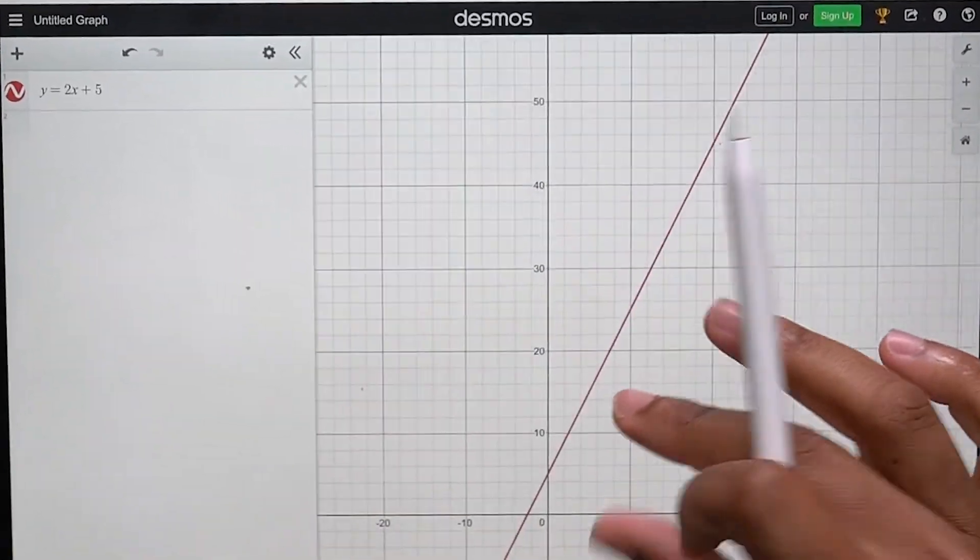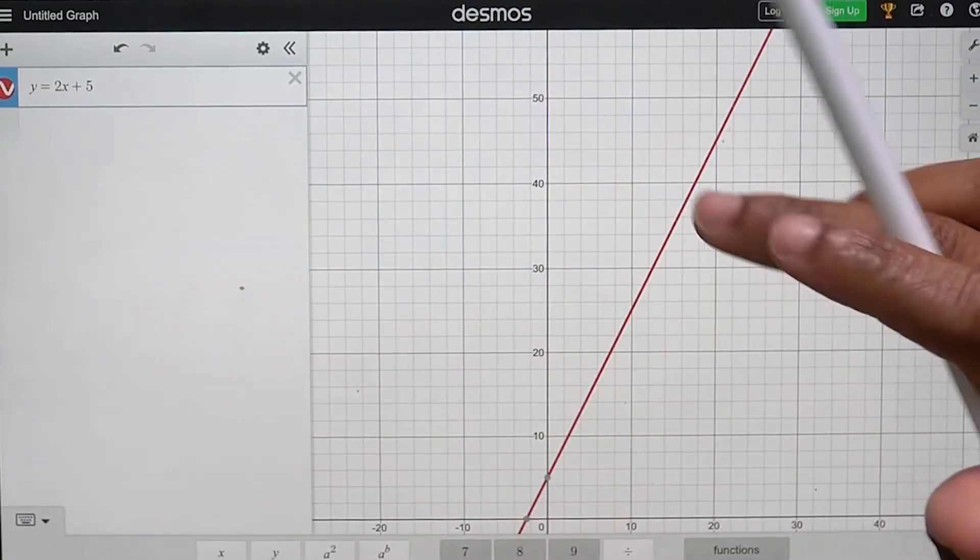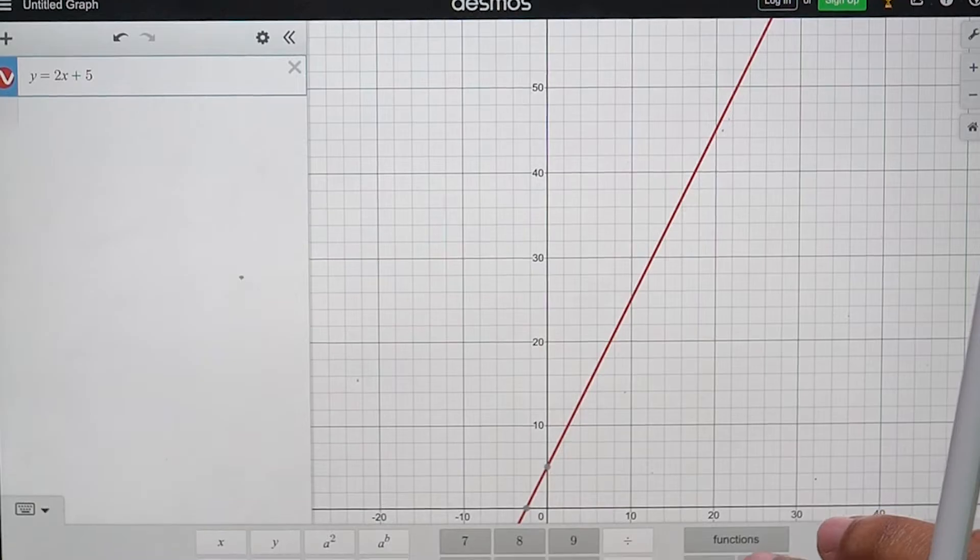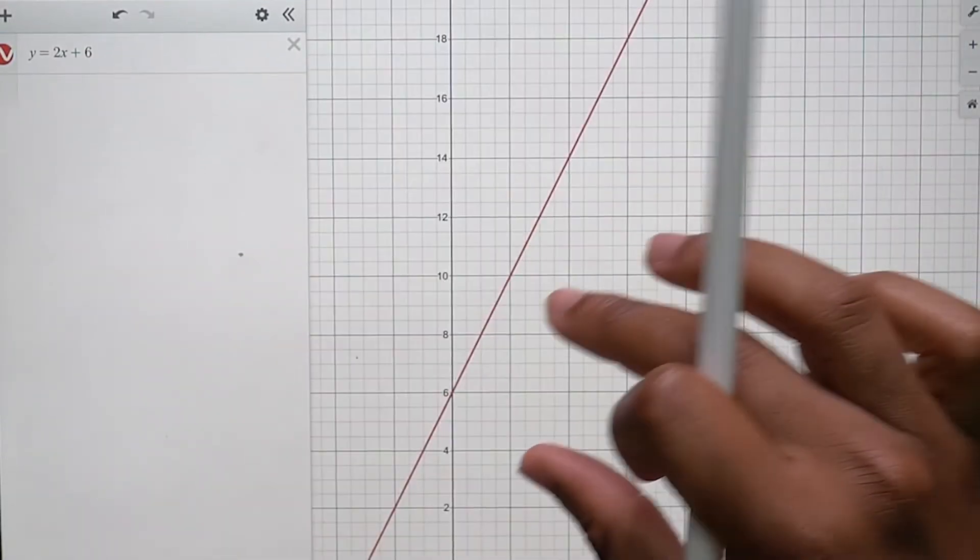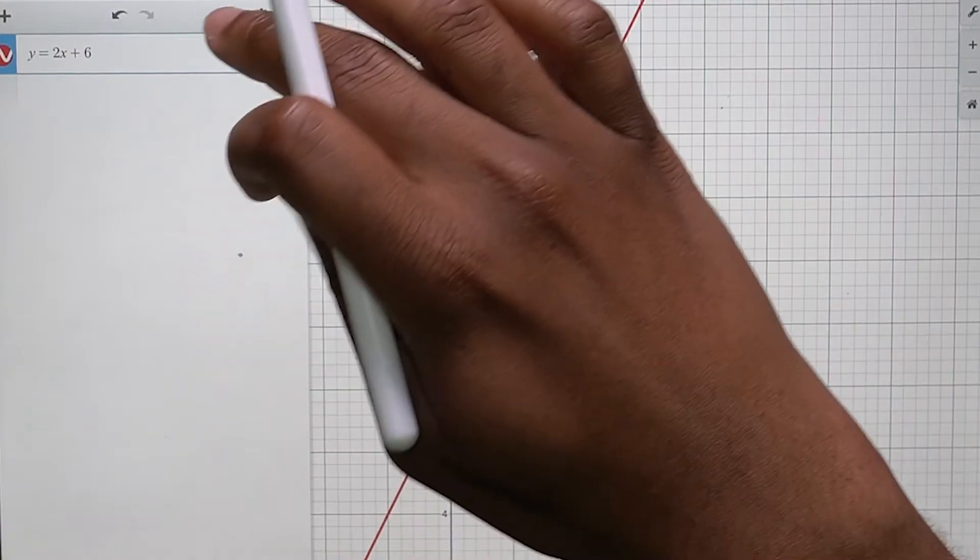This is the equation of a line. This red line here is described by y equals 2x plus 5. But watch this. If I change this number on the outside here to 6, this point went up. Maybe you didn't notice it.